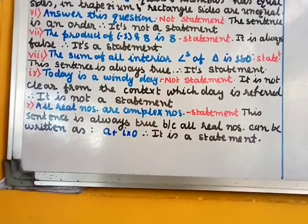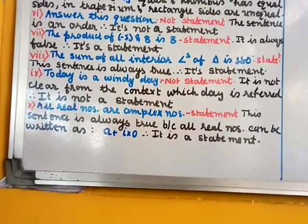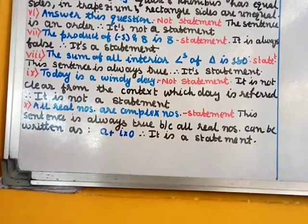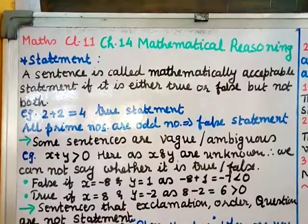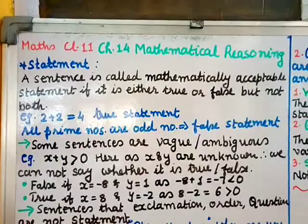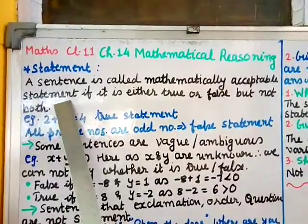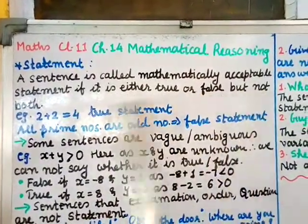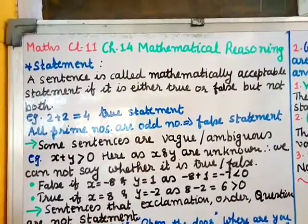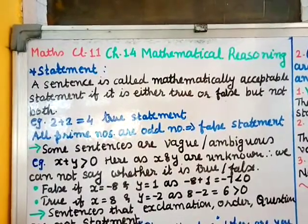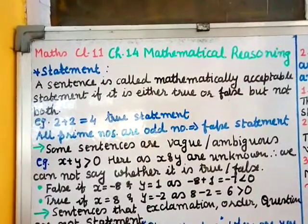In mathematical language there are two kinds of reasoning: one is inductive and the other is deductive. We have already discussed inductive reasoning in the context of mathematical induction. In this chapter we shall discuss some fundamentals of deductive reasoning. First, we shall define 'statement'. In mathematics, a sentence is called a mathematically acceptable statement if it is either true or false, but not both. If a given sentence sometimes can be true and sometimes false, then there is a dilemma.